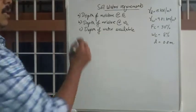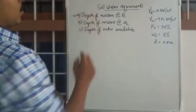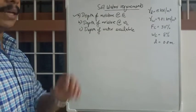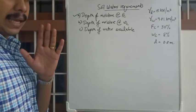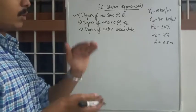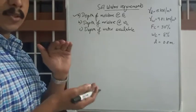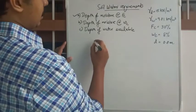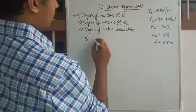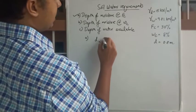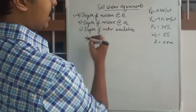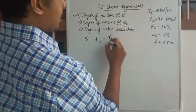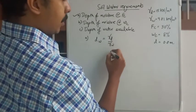We will address the first one: depth of moisture at FC. The equation for depth of moisture in a soil mass is: dw = (γd / γw) × d × (moisture content). So for FC, dw = (γd / γw) × d × FC.